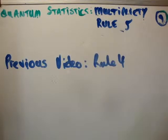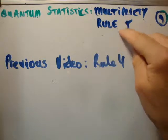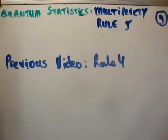In this video I'm going to continue on with my tutorial series on quantum statistics. This is multiplicity rule number five. The previous video is rule number four and this is lecture number nine or tutorial number nine.